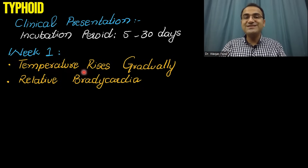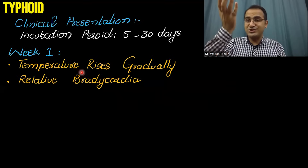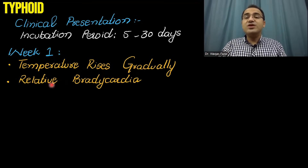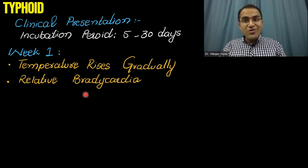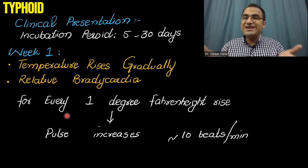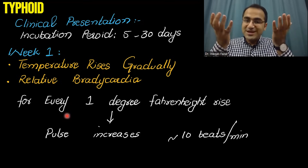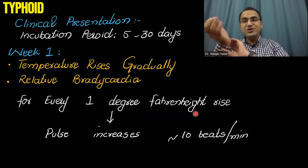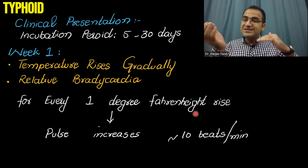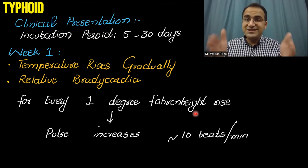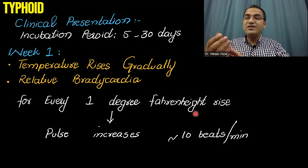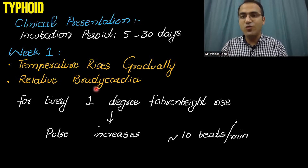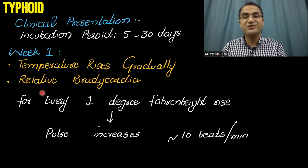In the first week, there will be a gradual rise in temperature with a relative bradycardia. Normally, with every 1 degree rise in body temperature, the pulse increases by 10 beats per minute. But in typhoid, when the temperature is increasing, the pulse is not increasing accordingly — that is called relative bradycardia, which you will be able to appreciate in a patient with typhoid.